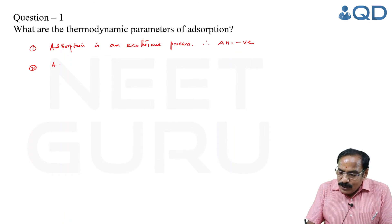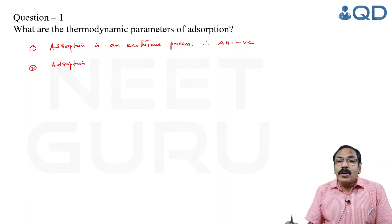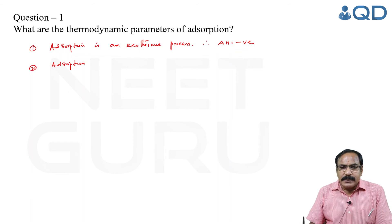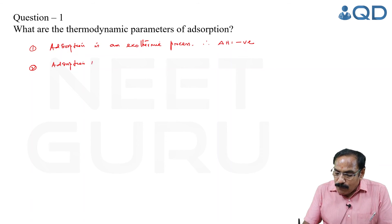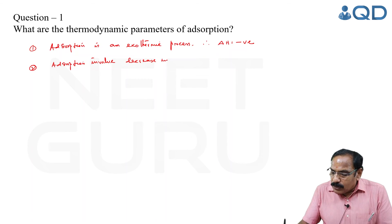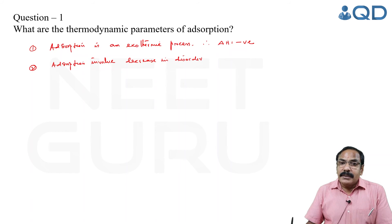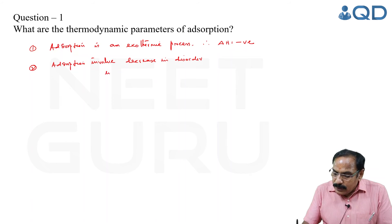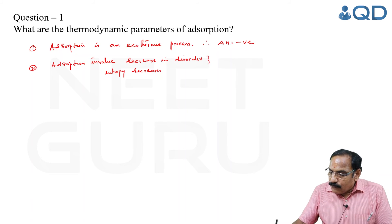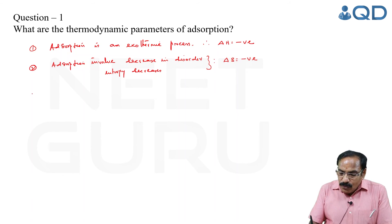Second, during adsorption, gas molecules are deposited on the surface and therefore disorder decreases — or entropy decreases. Adsorption involves a decrease in disorder, and in terms of thermodynamics, disorder is measured by entropy. Therefore delta S, the change in entropy, is negative.